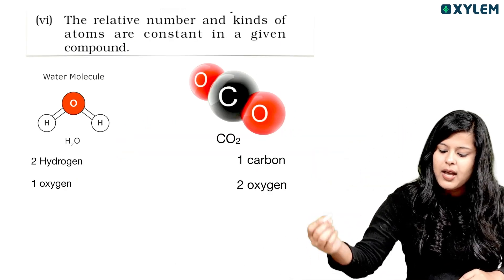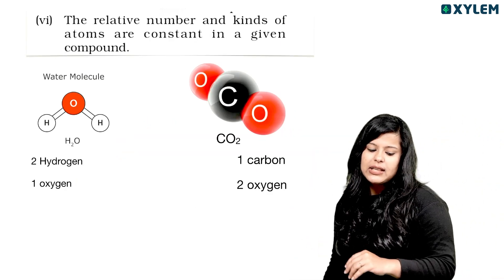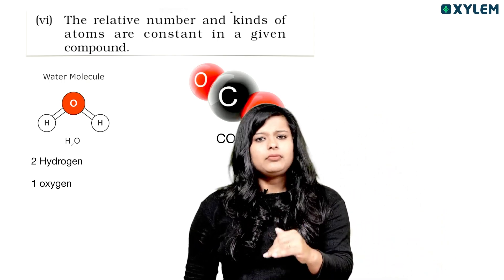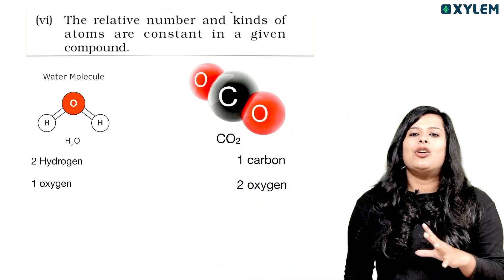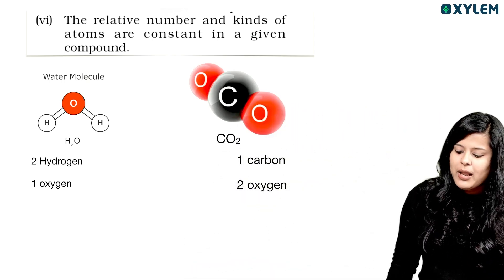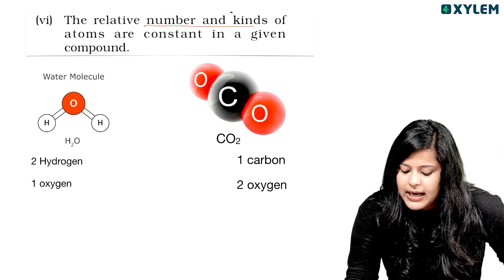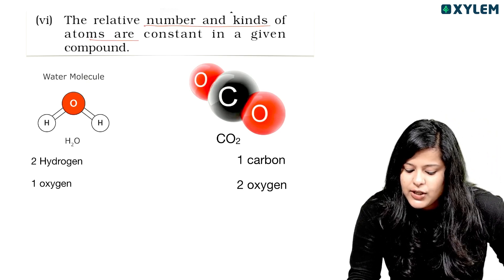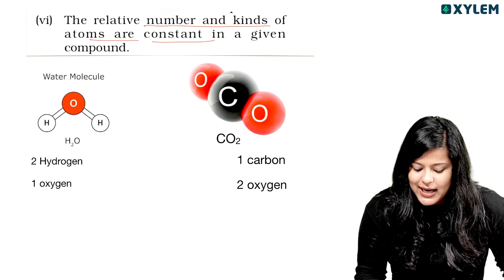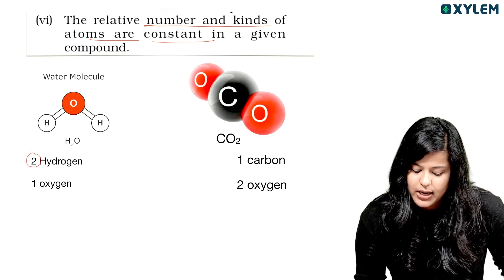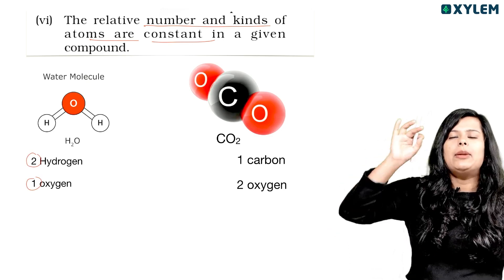The relative number and kind of atoms are constant in a given compound. For example, H2O always has two hydrogen and one oxygen. Carbon dioxide always has one carbon and two oxygen. The relative number of atoms is constant and well distributed.